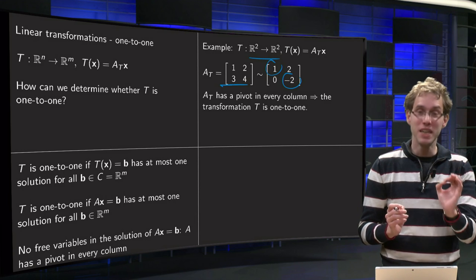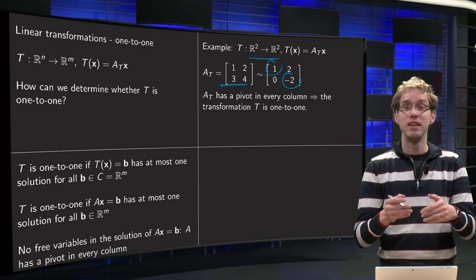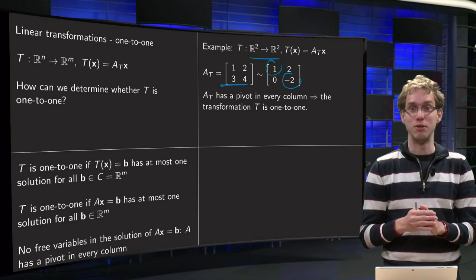Again the transformation is 1 to 1, the transformation T is 1 to 1. A matrix A cannot be 1 to 1, the corresponding transformation is said to be 1 to 1.